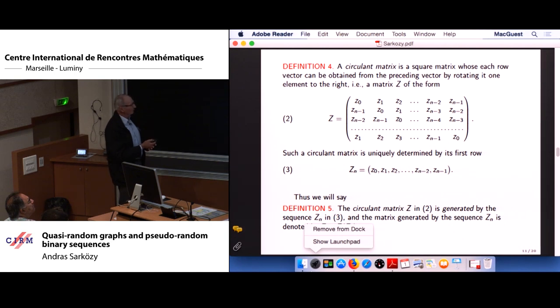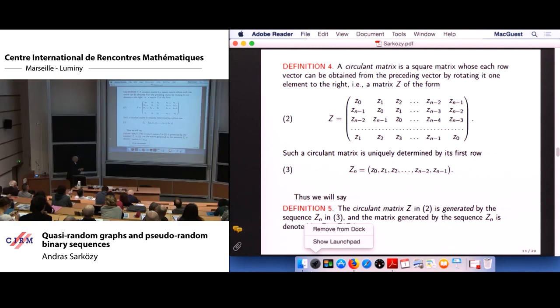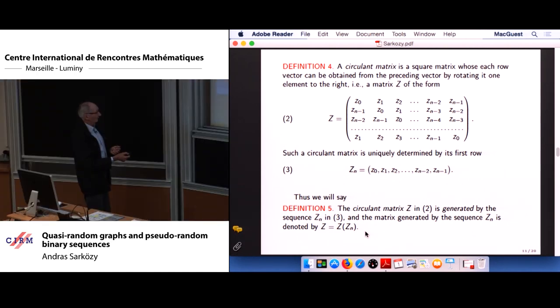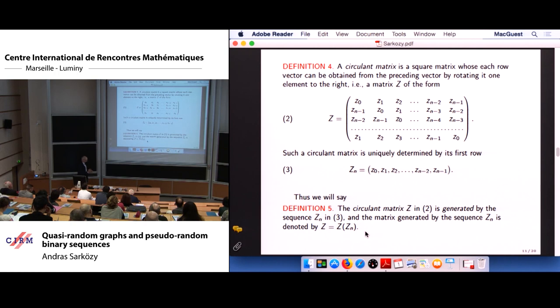Moreover, we will denote, we will use this notation that you see there, Z of Z_n. It means the circular matrix generated by this vector here, this vector Z_n.